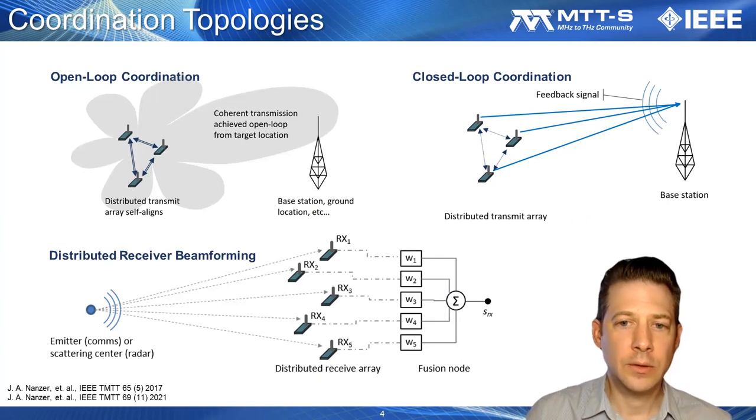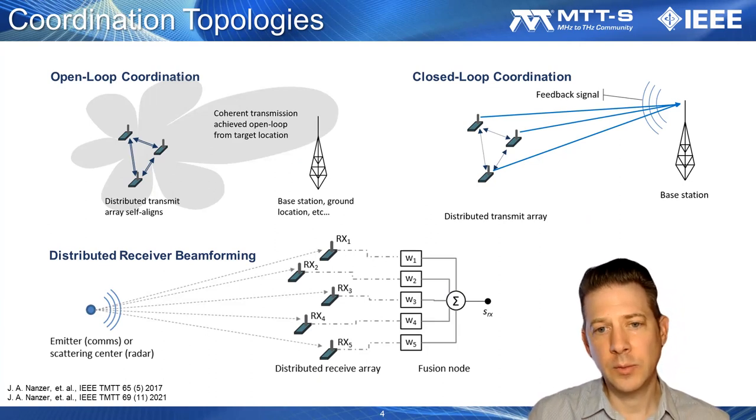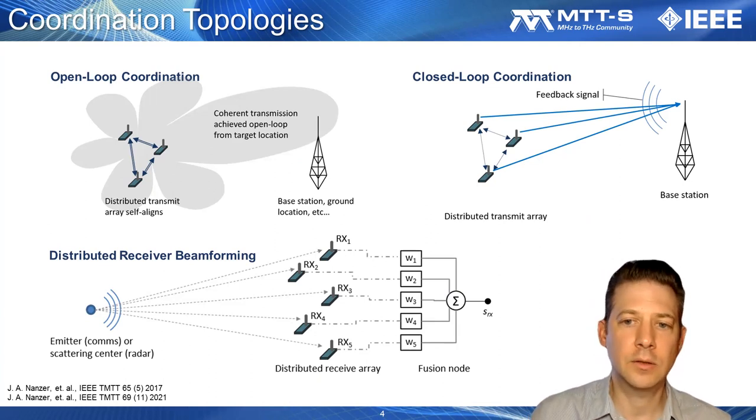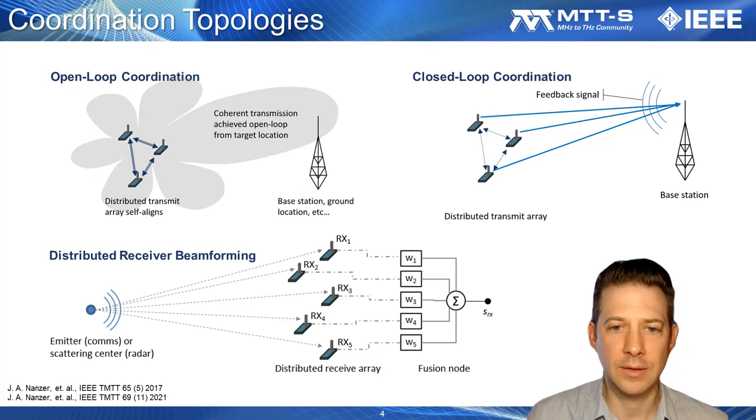Topologies supporting wireless phase coherent coordination are an active area of research. Generally, we can categorize distributed arrays into open-loop and closed-loop topologies, referring to whether the destination provides active feedback or inputs to the array in order to help the coordination process. Closed-loop topologies operate with more information than open-loop topologies since they're getting feedback from the destination, and so they require less coordination and less control in order to achieve the phase coherent state.